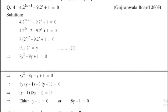Taking y - 1 common, we get (y - 1)(8y - 1) = 0.